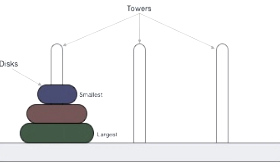Basically, it is a math puzzle that consists of three towers. One of the towers has these rings — the small, the medium, and the large. It's kind of like one of those children's toys you see at Toys R Us. Our job is to move all the discs to another tower, but there are some rules you have to follow.